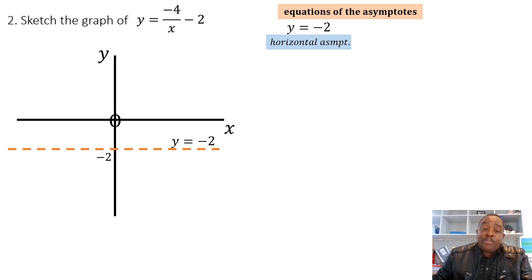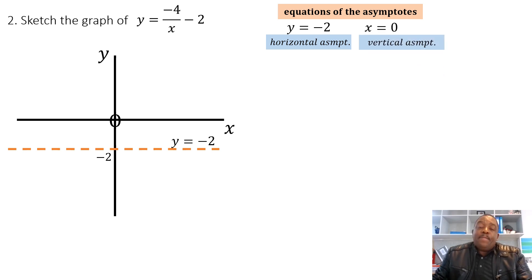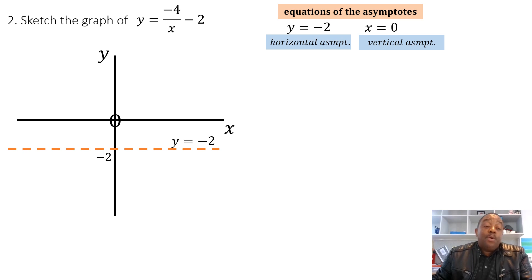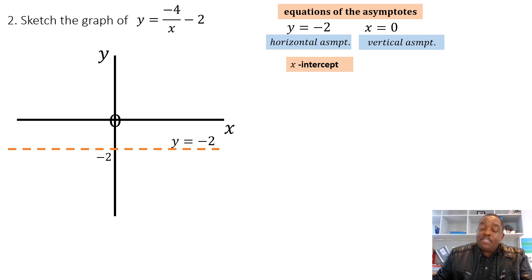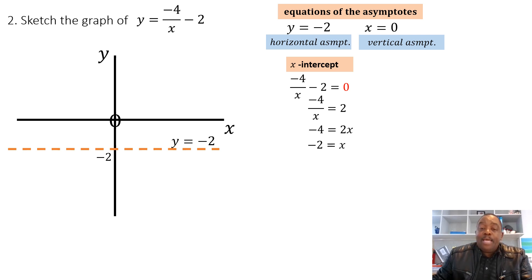The horizontal asymptote is y = -2, which we read directly from the equation, and we show this on our sketch. The vertical asymptote has not shifted since the graph only moved vertically, so it stays on the y-axis and does not appear on the sketch. To find the x-intercept, replace y with 0 and solve: x = -2. So the graph cuts the x-axis at x = -2.